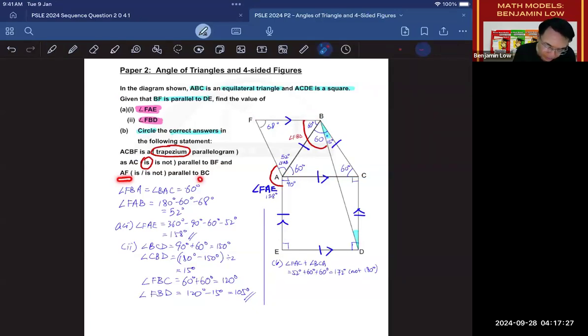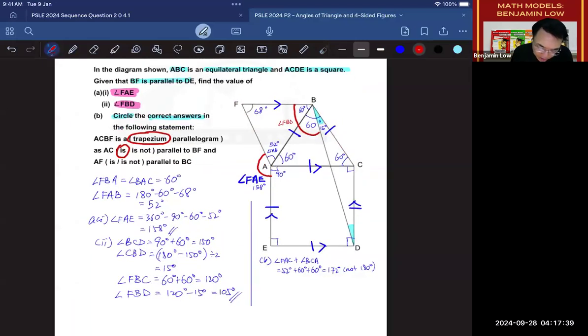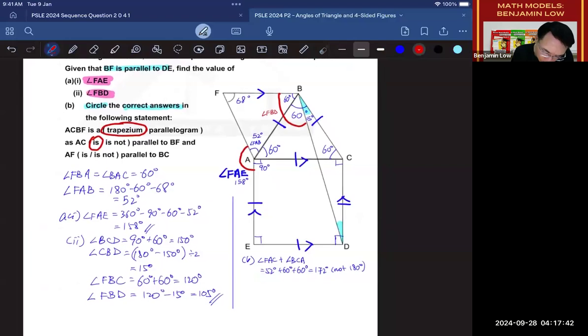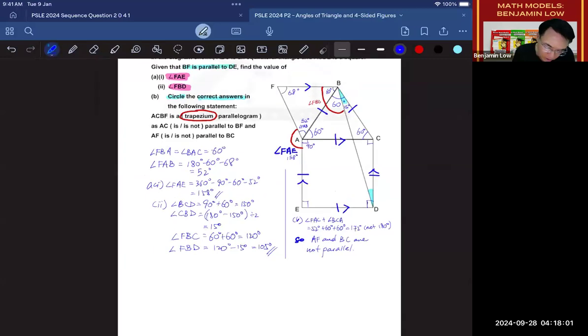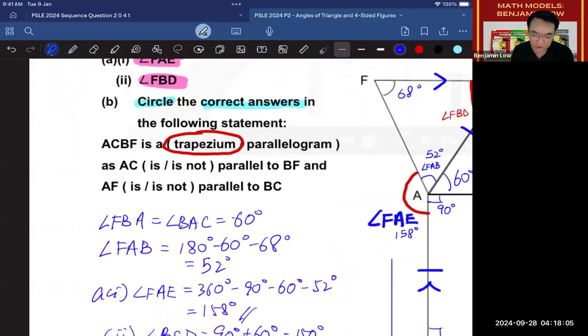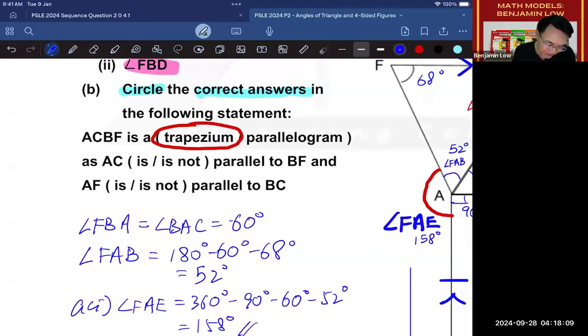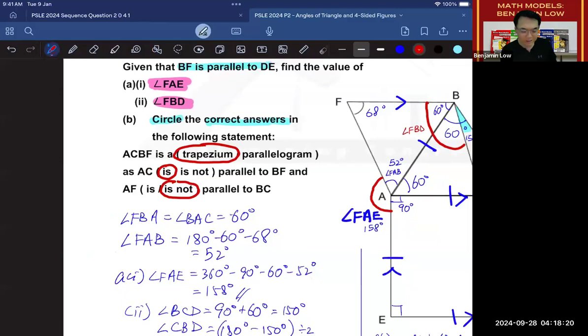And, AF and BC, AF is here. BC is here. These two lines are not parallel as we have proven. So, we know that AF and BC are not parallel. So, AF and BC are not parallel. And because of this, we know that the first answer, which disappeared, it is, and it is not parallel. So, the answer will be as such.